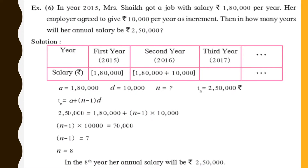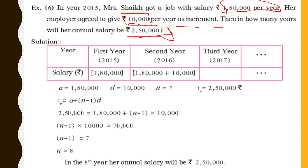In 2015, Mr. Shake got a job with a salary of one lakh eighty thousand rupees per year. The employer agreed to give a 10,000 rupees per year increment — so the common difference d is 10,000 rupees. Then in how many years will the annual salary be two lakh fifty thousand rupees? You have to find n.